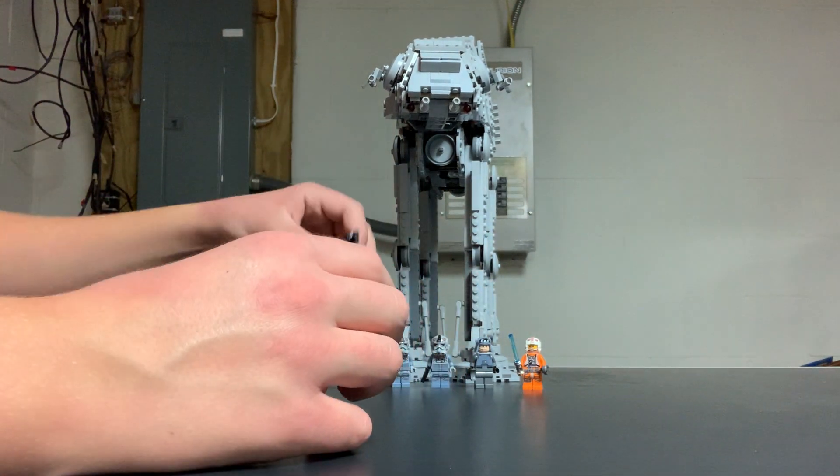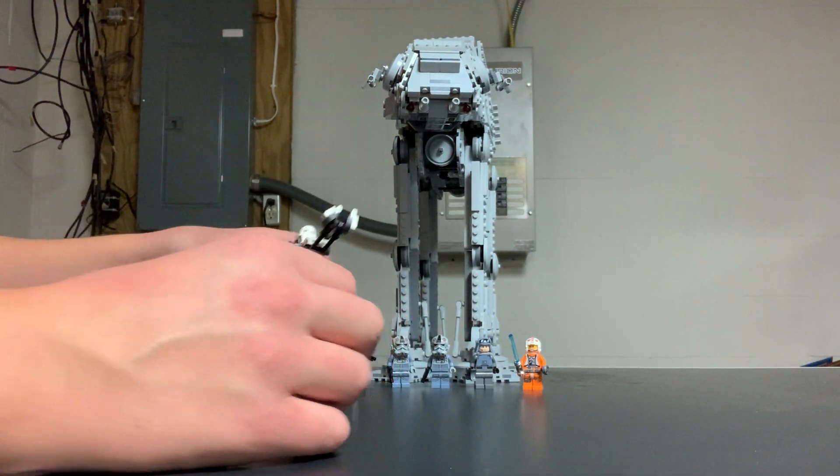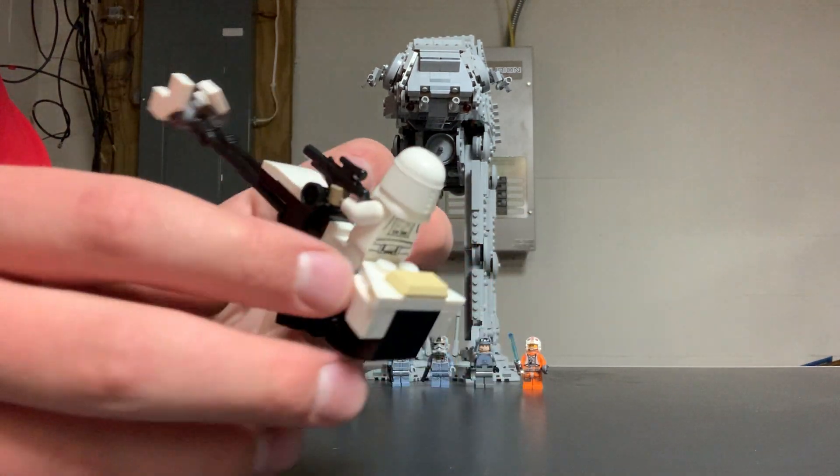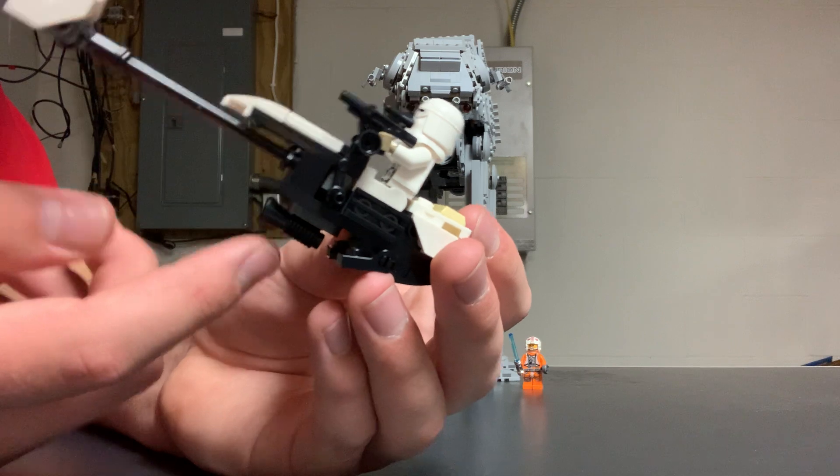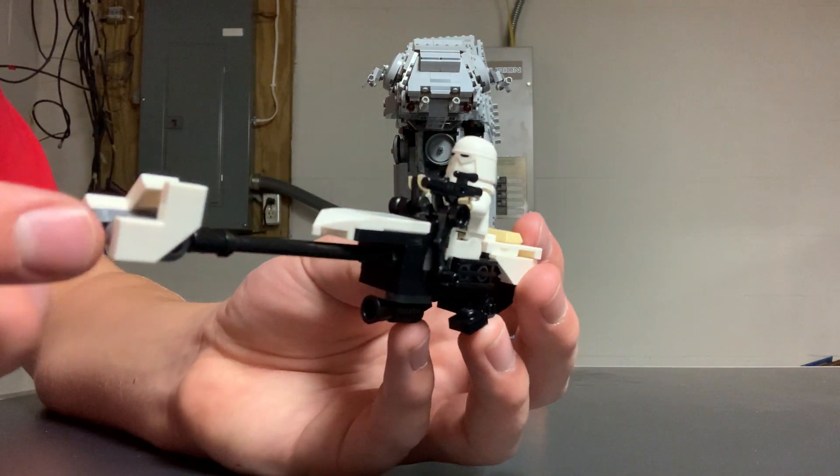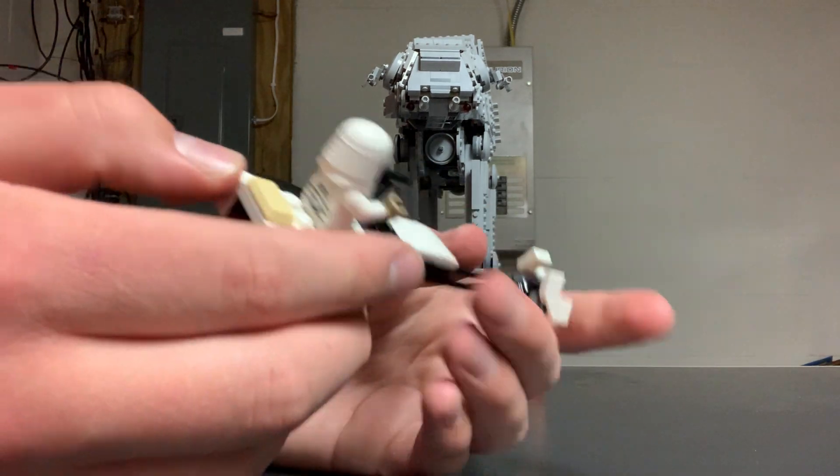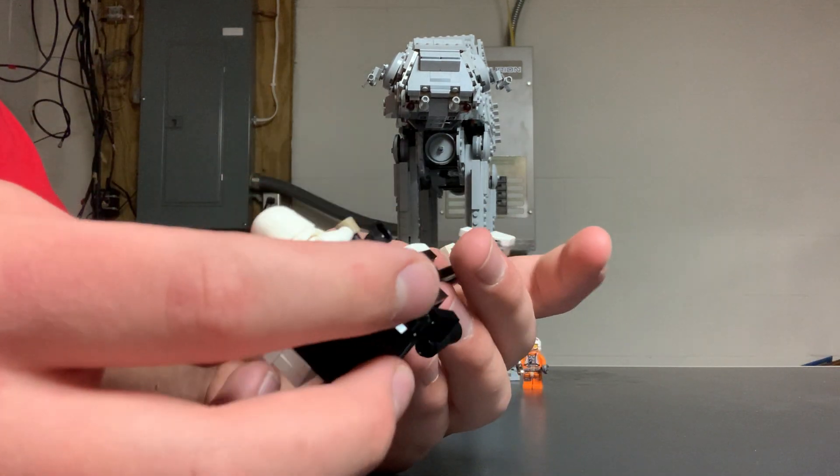It's always nice to get those side builds in these big sets. And then, of course, we've got the Snowspeeder with the little blaster on the bottom, like the actual Snowspeeders do in the movies. We've got the fins in the front and white to make it look like Hoth.